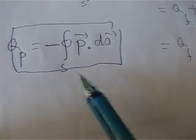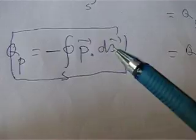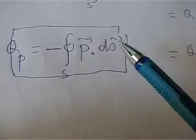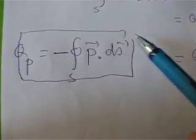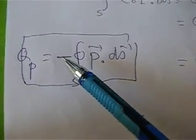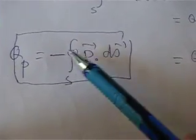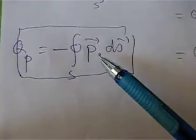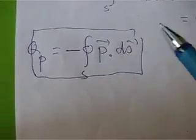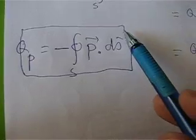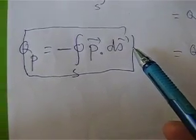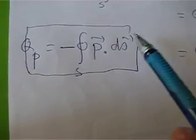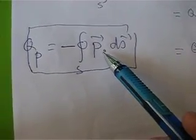This is the continuation of last lecture. The polarized charge qp can be expressed as minus of the surface integral of P dot dS, where P is the polarization vector and dS is the elementary surface area. The negative sign is introduced due to the fact that as the external electric field is applied to the dielectric, the direction of the induced or polarized electric field is just opposite to the external electric field.